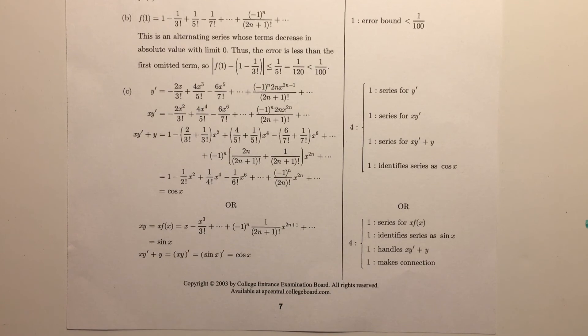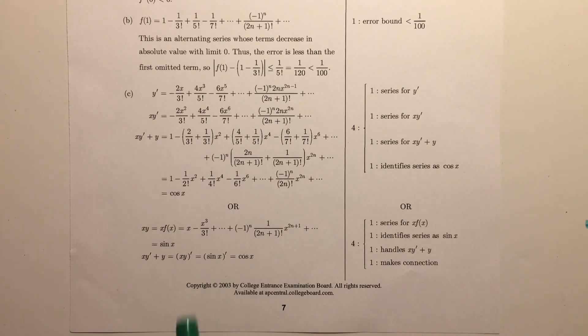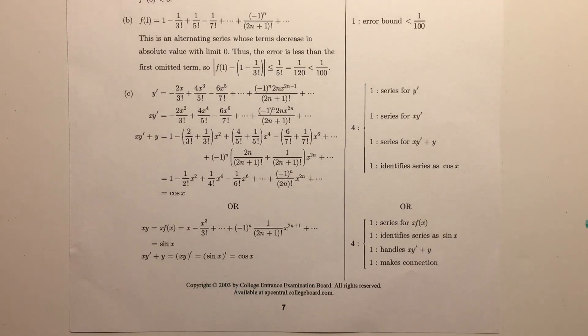I found the other way that they interpreted this problem to be quite interesting. What they did is that they recognized that the derivative of x y is equal to x y prime plus y. From there, they set x y equal to x f of x. Then they wrote out the series for x f of x. They saw that this was equal to sine of x. Then from there, they derived it to get cosine of x.